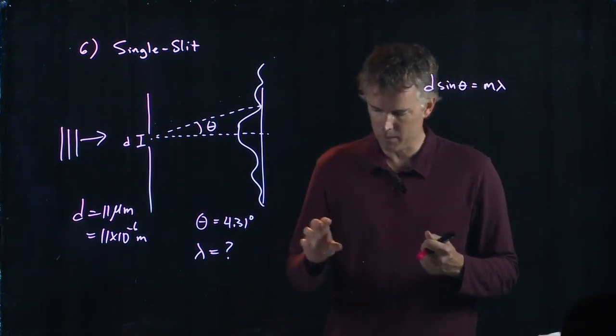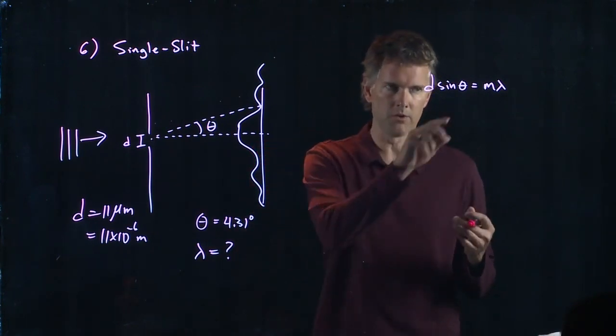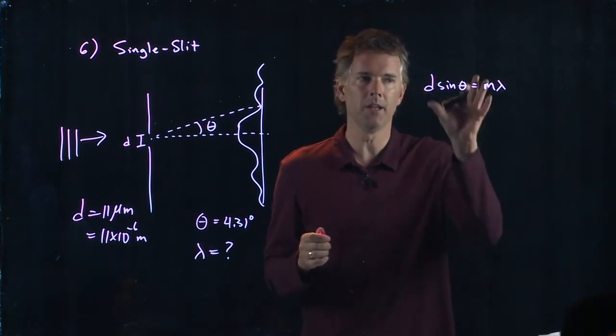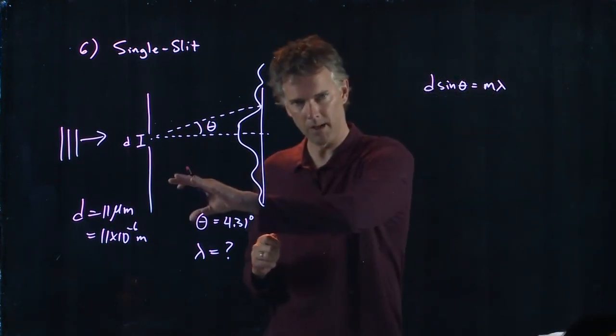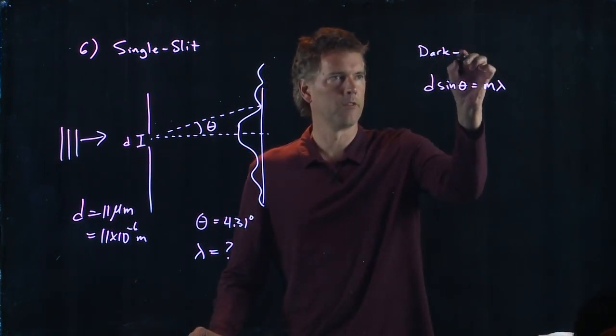That is in fact the same equation as this. In that equation, A is the width, and so that's D, and P is an integer, that's our M. So this is kind of weird, right? But this is the bright fringe for a double slit. It's also the dark fringe for a single slit.